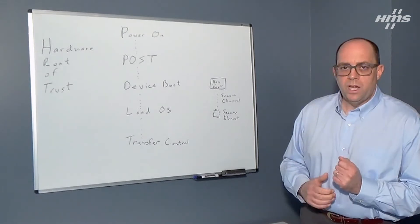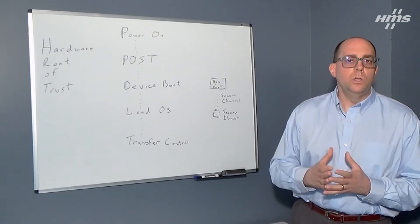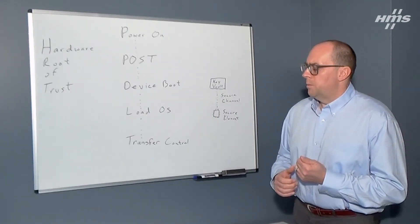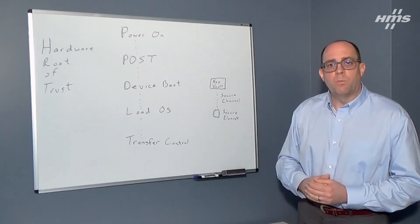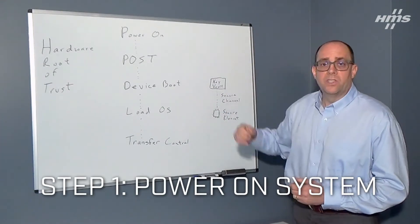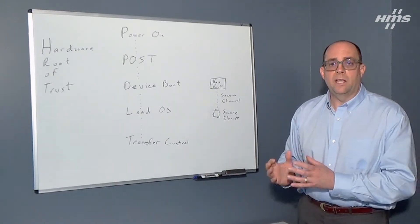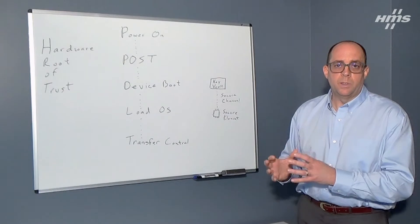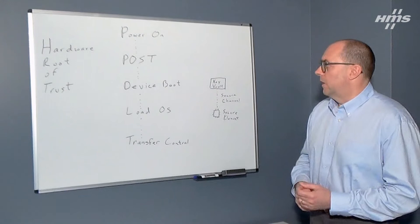The easiest way to think about this is to think about a device that you use every day, which is your personal computer. When you interact with your personal computer and start it up, there are essentially five steps that it goes through. First is when you power on the system — the computer goes to the read-only memory and runs a specific piece of code within the CPU that initiates the boot process.